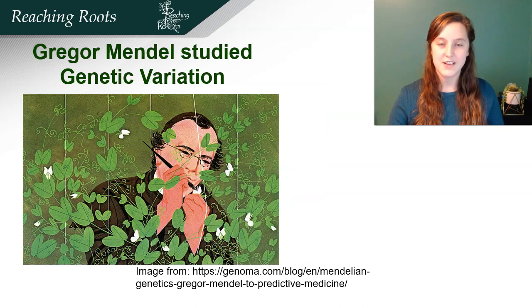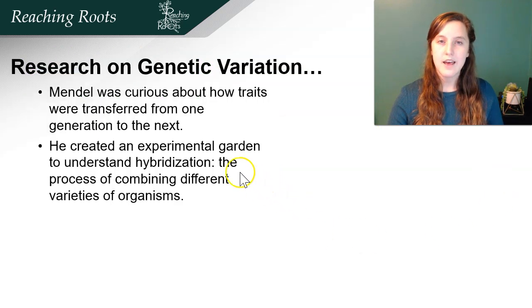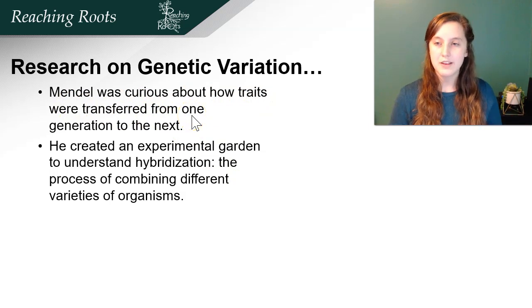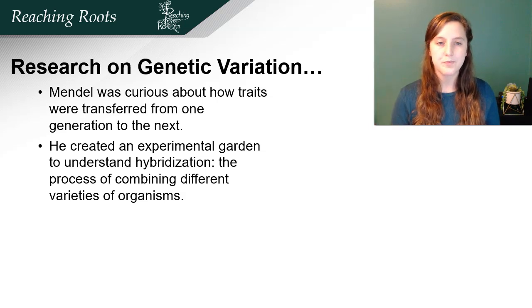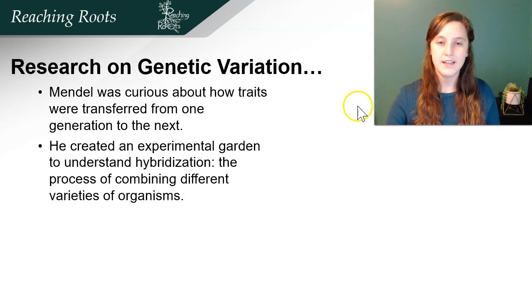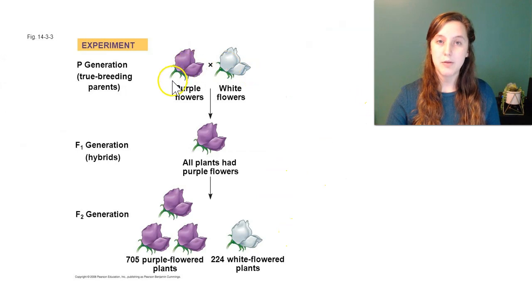Gregor Mendel was very interested in genetic variation and he did research on pea plants. Mendel was curious about how traits were transferred from one generation to the next. He looked at different pea plants and found genetic variation such as flower color, seed size, and seed orientation — either wrinkled or round. He created an experimental garden to understand hybridization, the process of finding different varieties of organisms. Let's look at what happened when he crossed pea plants with purple flowers with pea plants with white flowers.